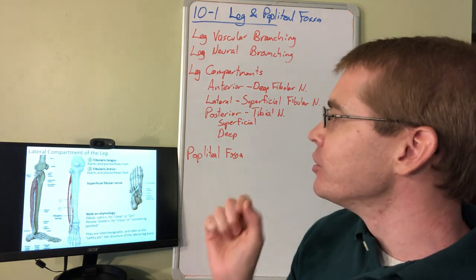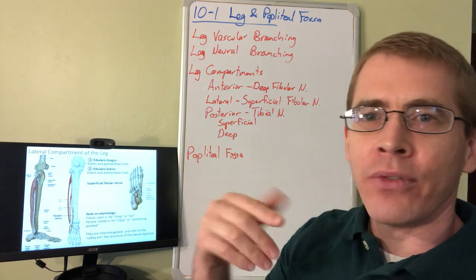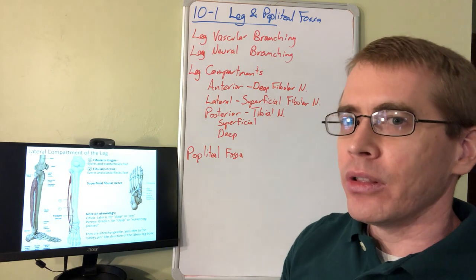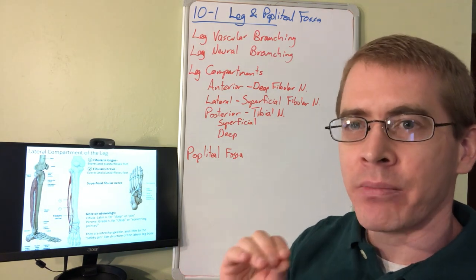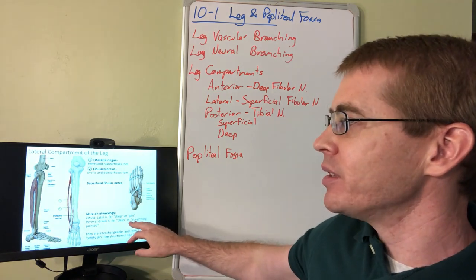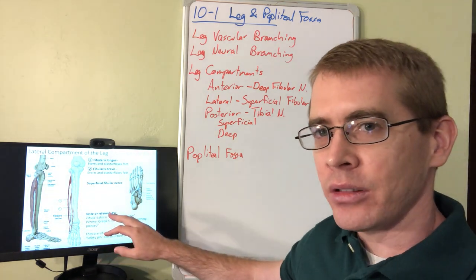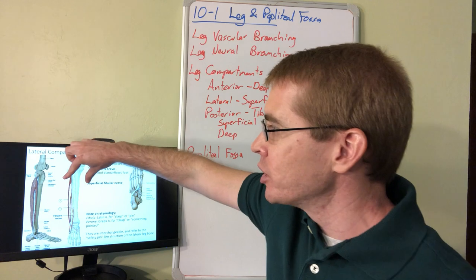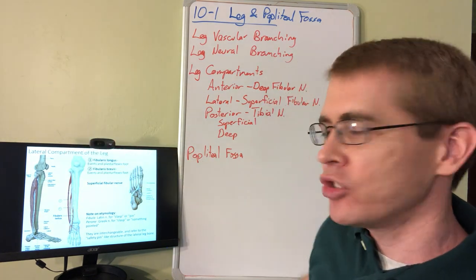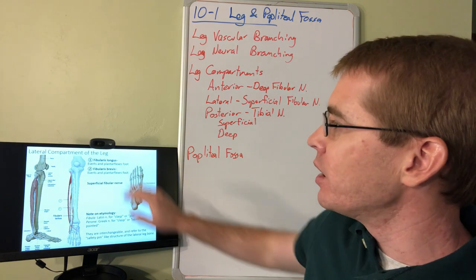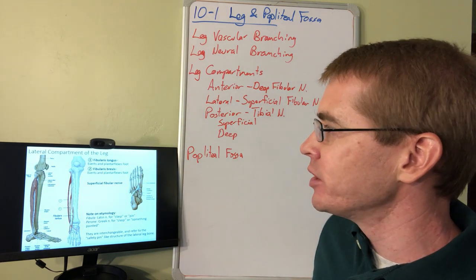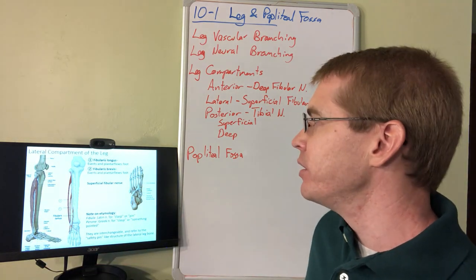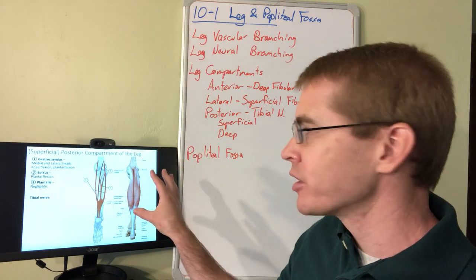The lateral compartment is innervated by the superficial fibular nerve. Note that 'fibular' and 'peroneal' are interchangeable terms — fibula is Latin and perone is Greek, both referring to the clasp-like structure of the fibula next to the tibia. The muscles of the lateral compartment evert the foot and also plantar flex it.